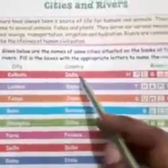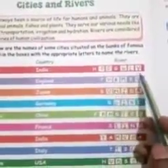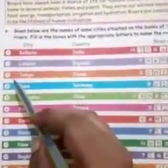1. Kolkata, India — Hooghly. H-O-O-G-H-L-Y. 2. London, England — Thames. T-H-A-M-E-S.